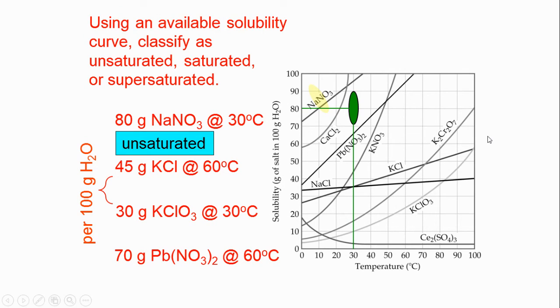Let's try the next one. 45 grams of potassium chloride at 60 degrees Celsius. Go to 60 degrees Celsius, go up until you hit 45 grams, and make a little dot there. Well, it looks like we hit right on that line. And if you're on the line, what type of solution have we made? Saturated. Very good.